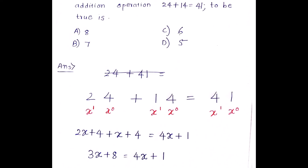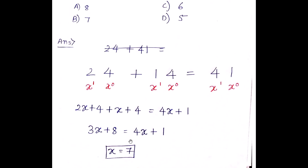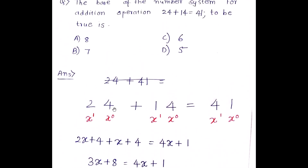The technique is to write the expression and assign powers of x from LSB to MSB. For 24: 2·x¹ + 4·x⁰. For 14: 1·x¹ + 4·x⁰. The result 41 gives: 4·x¹ + 1·x⁰. Setting up the equation: 2x + 4 + x + 4 = 4x + 1, which gives 3x + 8 = 4x + 1, so x = 7. Option B is the correct answer.